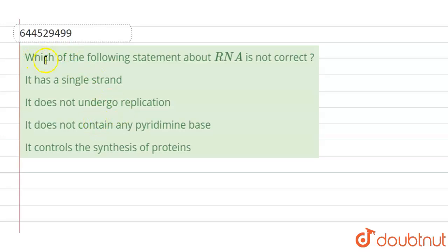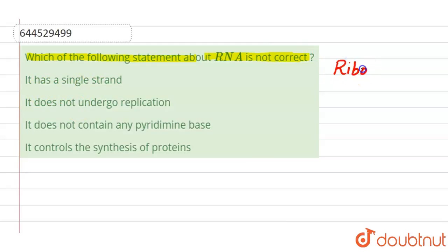The question is: which of the following statements about RNA is not correct? RNA is our ribonucleic acid.